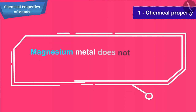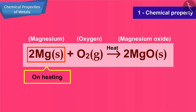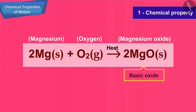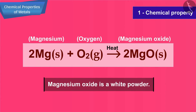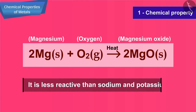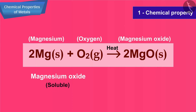Magnesium metal does not react with oxygen at room temperature, but on heating, it burns in air giving intense heat and light to form a basic oxide called magnesium oxide, which is a white powder. Since it required heat for the reaction to occur, it is less reactive than sodium and potassium. The product, magnesium oxide, is partially soluble in water, so it is a base.